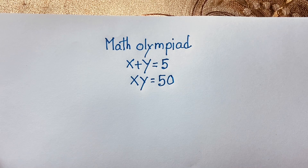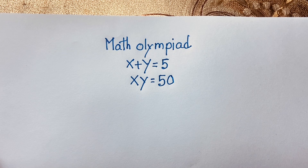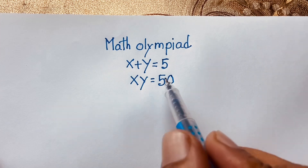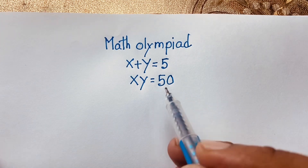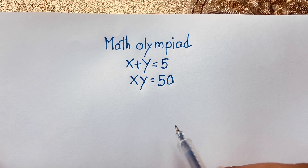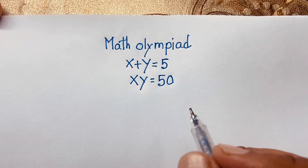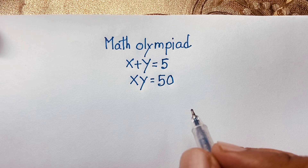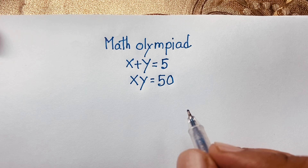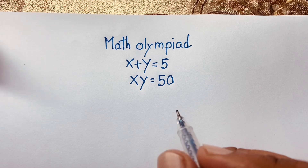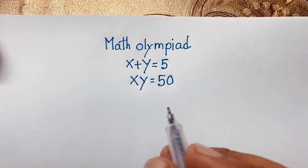Hello everyone. In this video we have solved a nice German Math Olympiad question. The question is x plus y is equal to 5, and x times y is equal to 50. We will find out what is the value of x and y in this math problem.